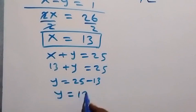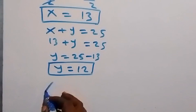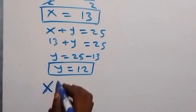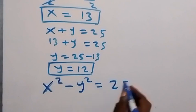Now we got y to be 12 and x to be 13. Is this truly satisfying what we have? We can check that. We have x square minus y square equals to 25. Now let's substitute the value of x and y.